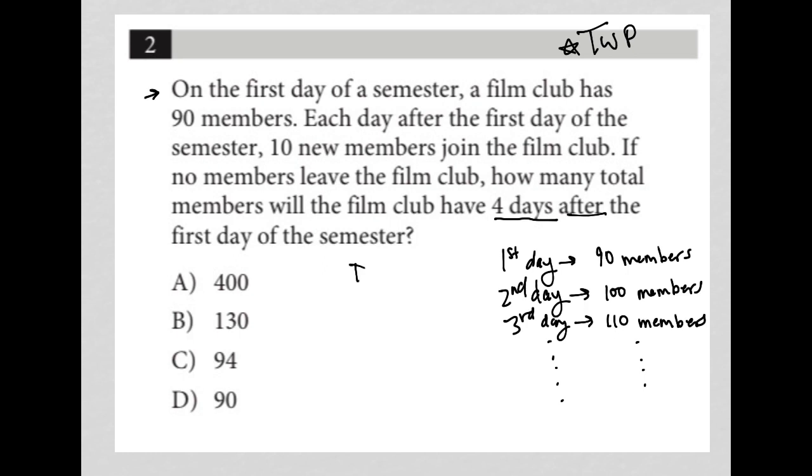Well, that would be day five, right? So on day five, how many members do we have? Well, we can just keep going with our list here. I can say, well, the fourth day, we should be to 120, and the fifth day, we should be at 130 members. So there's our answer.